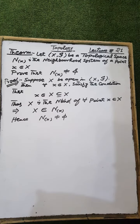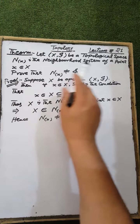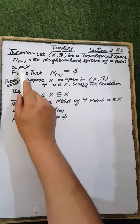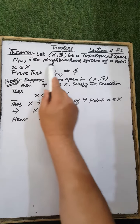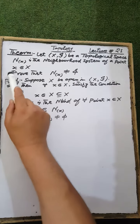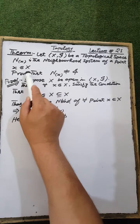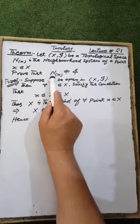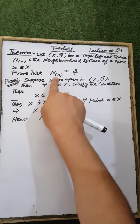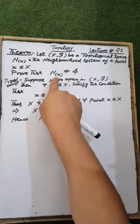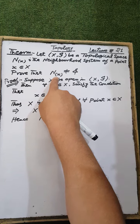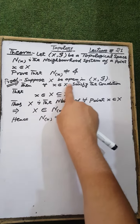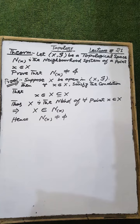Our next theorem. Let X be a topological space. N subscript X is the neighborhood system of a point x belonging to the ground set X. Prove that the neighborhood system of the point x is non-empty. Suppose X be open in a topological space X.